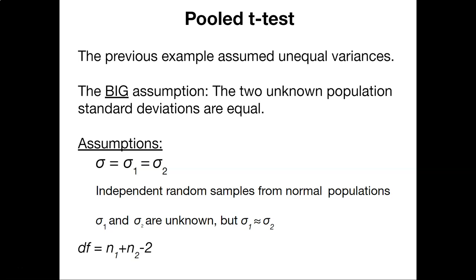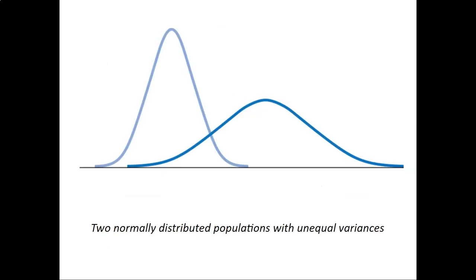So this is an example of how we might do and think about a pooled t-test. Here you see two normally distributed populations but they have unequal variances. So if you think back to the fertilizer example that we just went through, is it appropriate to make the assumption that the variances in those were equal? We could go take a look at what the variances were or the standard deviations for both of those samples. They were not necessarily equal in that example.